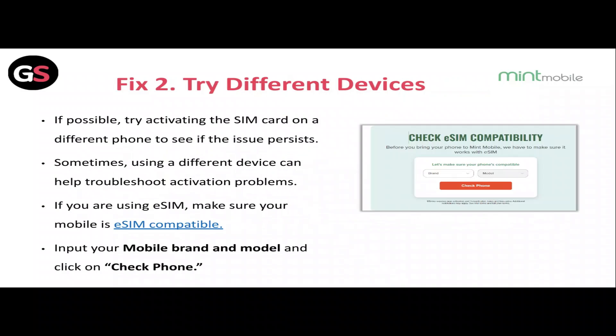Fix 2: Try different devices. If possible, try activating the SIM card on a different phone to see if the issue persists. Sometimes using a different device can help troubleshoot activation problems. If you are using eSIM, make sure your mobile is eSIM compatible. Input your mobile brand and model and click on 'Check Phone'.